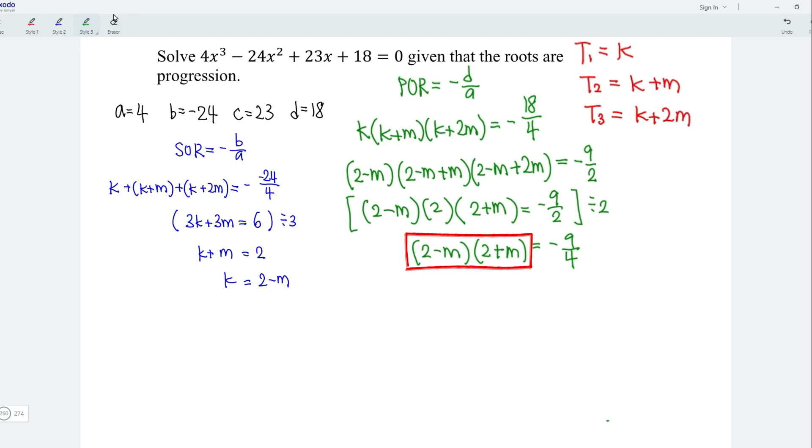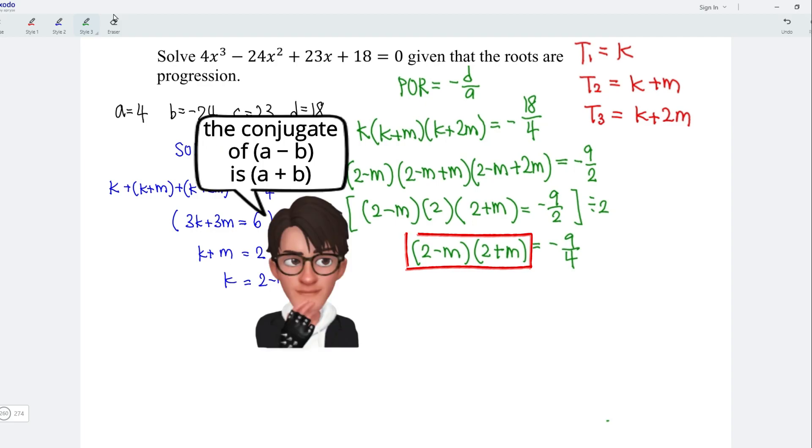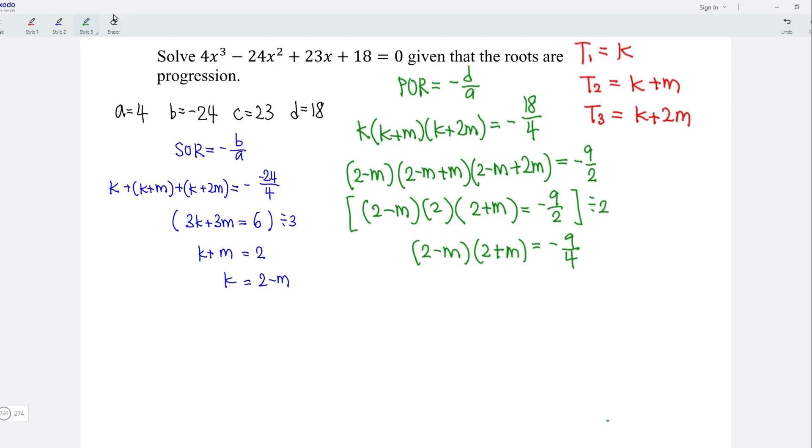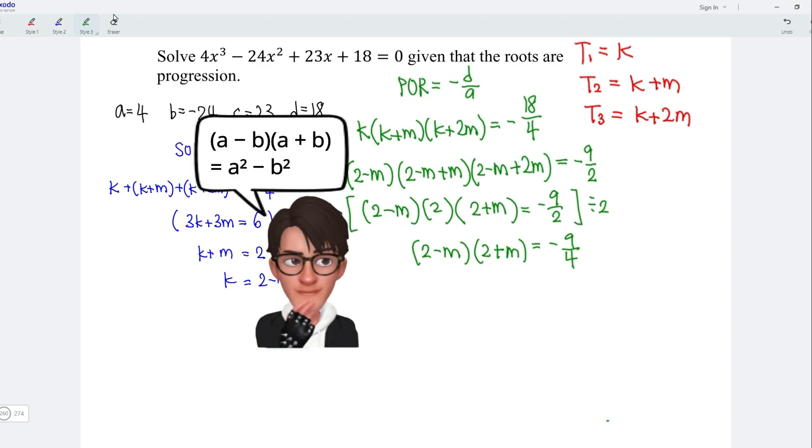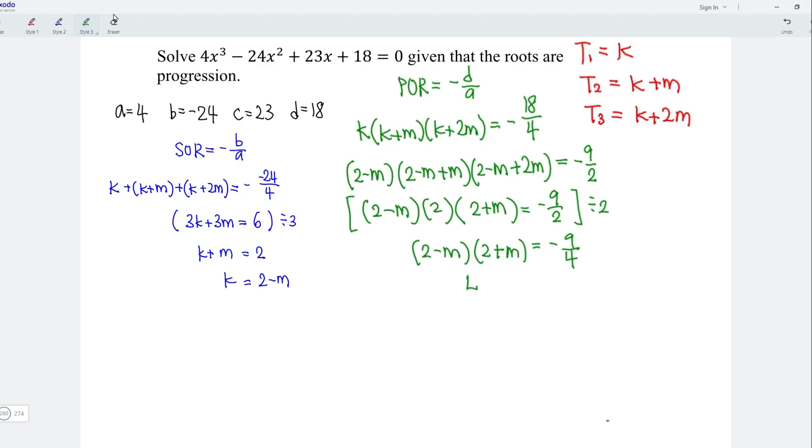As we can see, the left-hand side is a set of conjugates. And the product is pretty simple. That is A squared minus B squared. In other words, we have 4 minus M squared. And this is equal to negative 9 over 4.